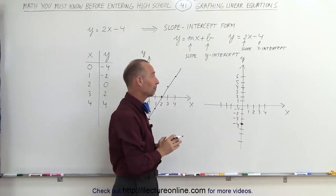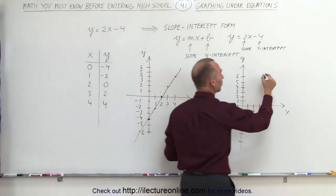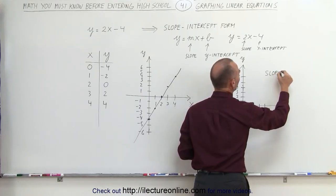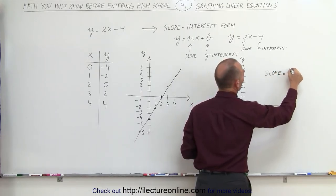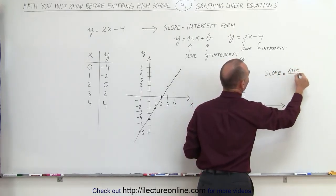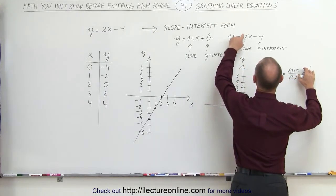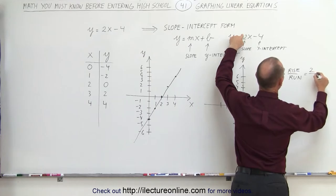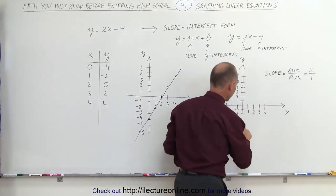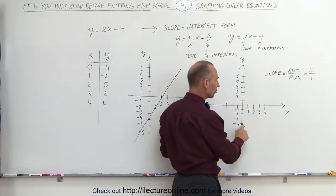Now the slope by definition is equal to the rise divided by the run. That means in this case, the slope, rise over run, is 2 divided by 1, which means starting from the place where it crosses the y-intercept.